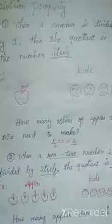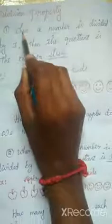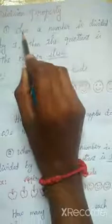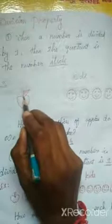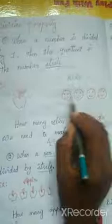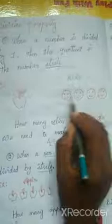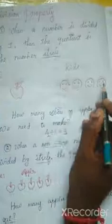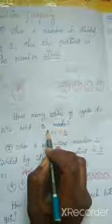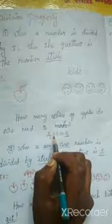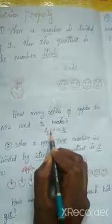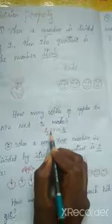Next are the division properties. First property: when a number is divided by 1, the quotient is the number itself. Example: there is only 1 apple but there are 4 kids. The question is how many slices of apple do we need to make? 4 slices. So 4 divided by 1 equals 4. When a number is divided by 1, the quotient is the number itself.